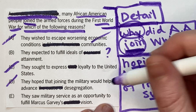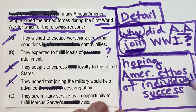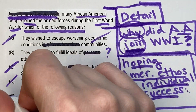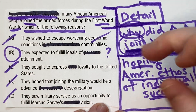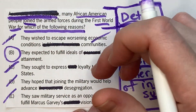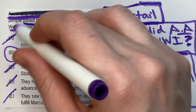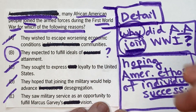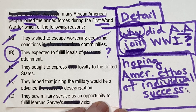E says 'they saw military service as an opportunity to fulfill Marcus Garvey's vision' — they weren't doing it for Marcus Garvey; if anything, they were doing it for themselves. So the correct answer is B. The reason you want the prediction written down is so you're not drawn into answer choices that contain factual information from the passage but don't answer the specific question being posed. That's the strategy for detail questions in reading comprehension. If you have questions about this passage or RC in general, feel free to ask in the comments below.